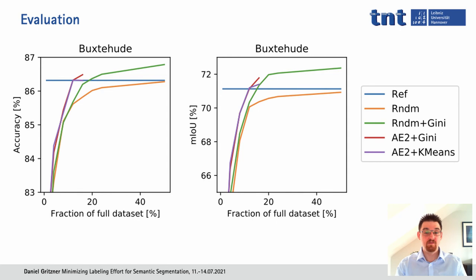Barely visible in purple, you can also see using the autoencoder strategy combined with k-means clustering in the latent space — it lies just on top of the red line, which is why it's barely visible. It also reaches the reference performance at 12% but doesn't quite manage to surpass the reference, staying at the reference level. As we can see, with much less data than the full set we can already achieve a very good model, meaning we don't need to label as much as the full dataset.